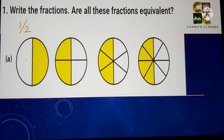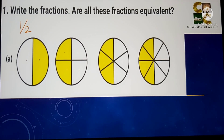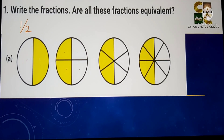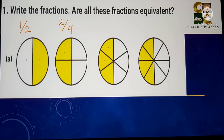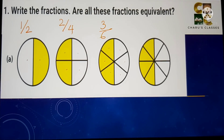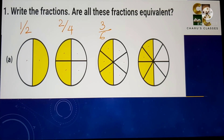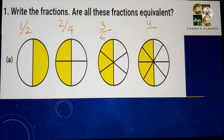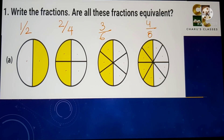Next fraction has a total of 4 parts and 2 are shaded, so we can write it as 2 by 4. Third fraction: 3 parts are shaded out of a total of 6 parts. Next fraction: 4 are shaded out of 8 total parts.